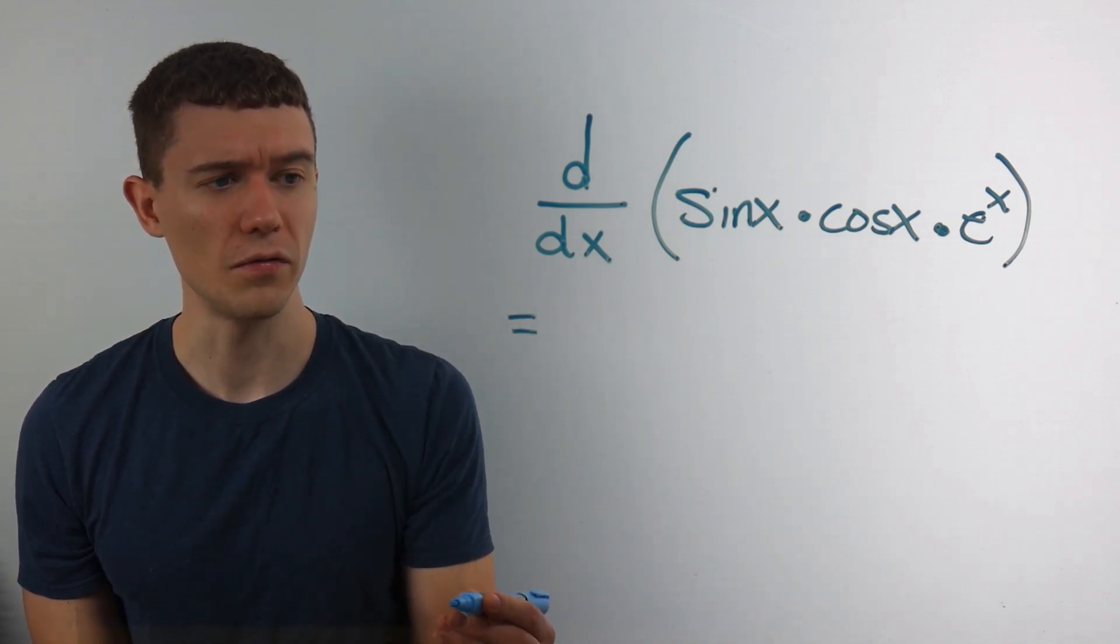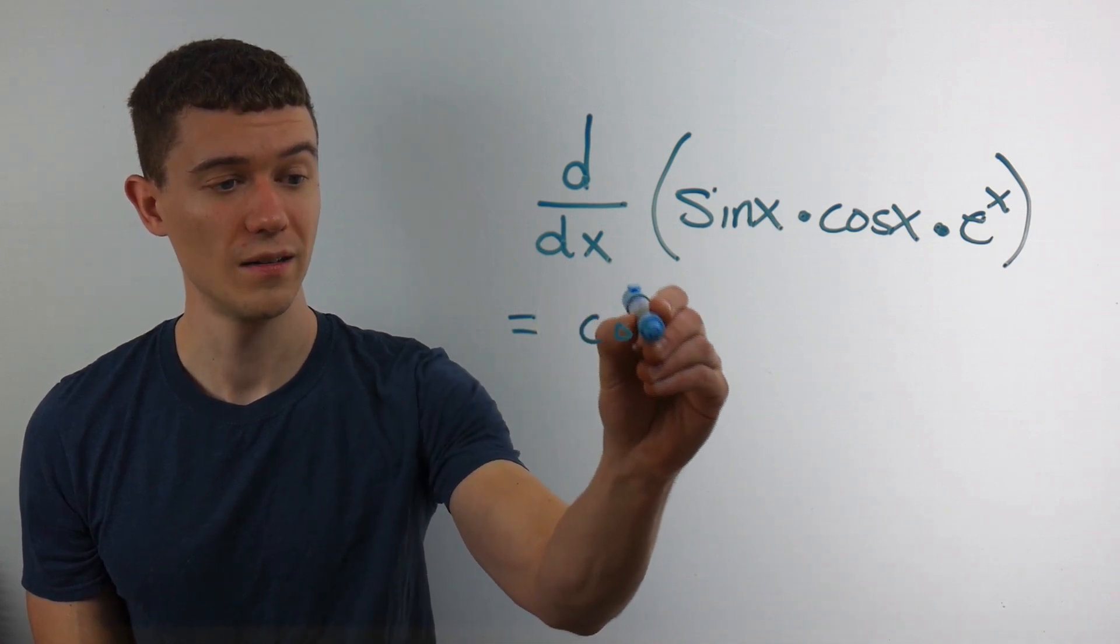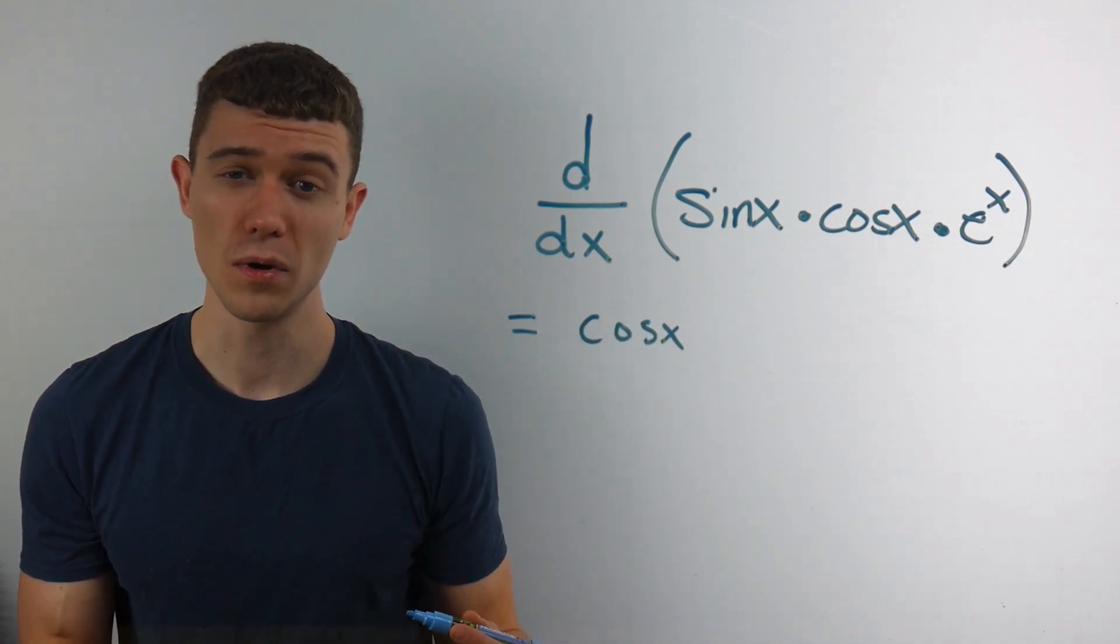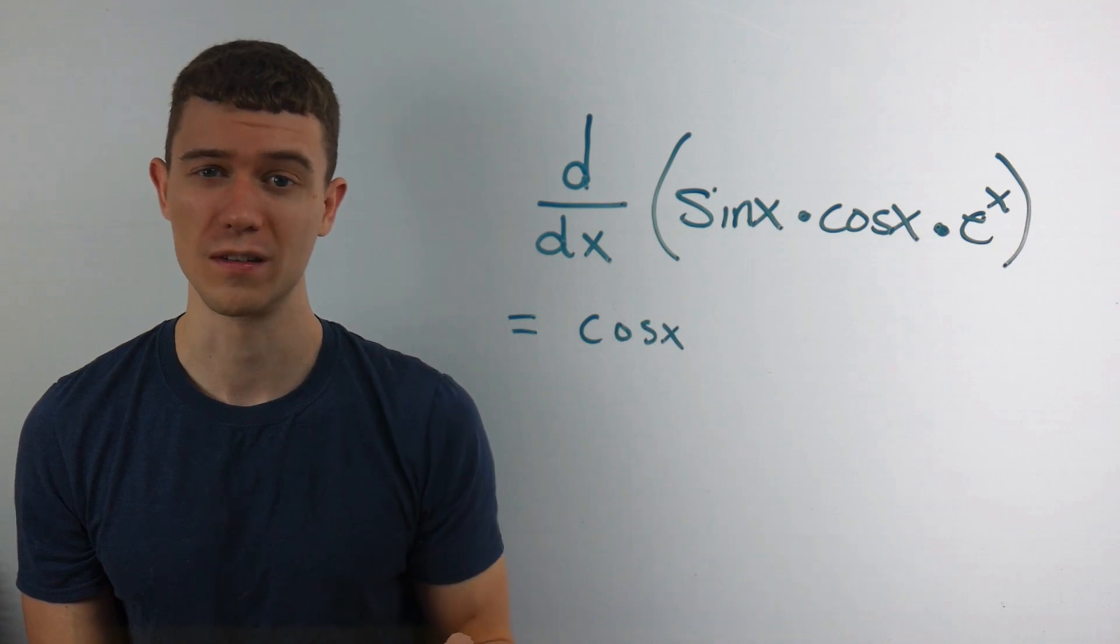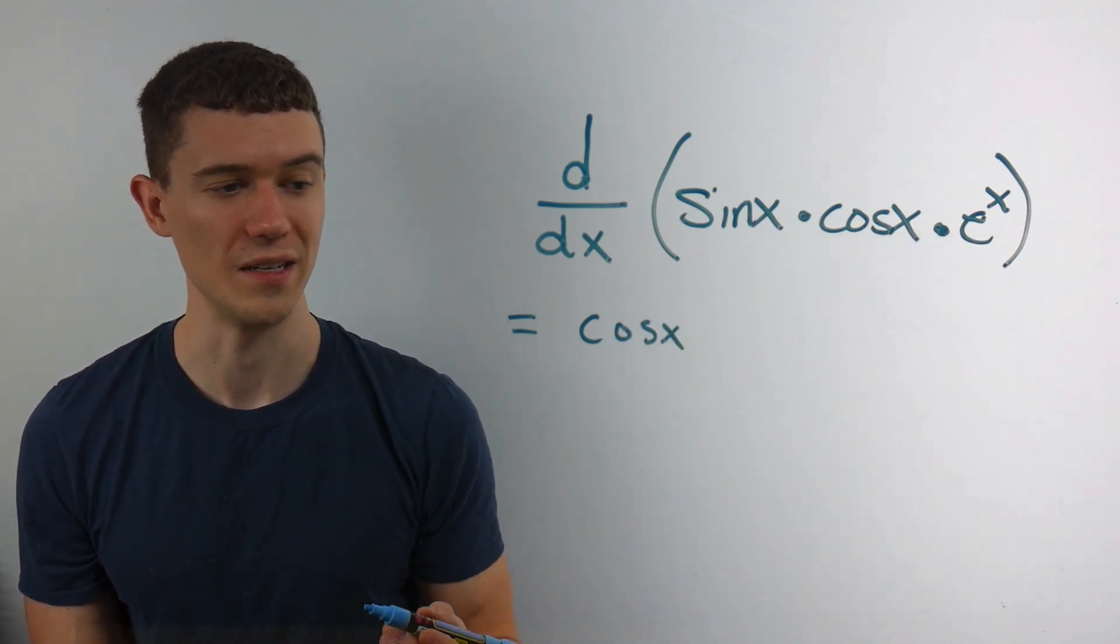Let's take the derivative of the first function. The derivative of sine is cosine. And just like the regular product rule, we just copy what's left. So I'll just multiply this by the cosine x times e to the x.